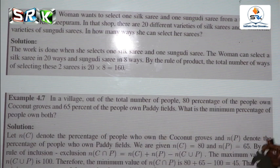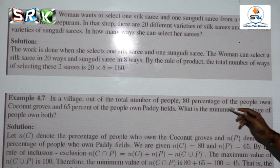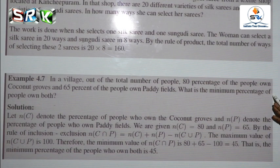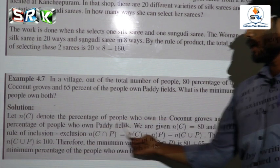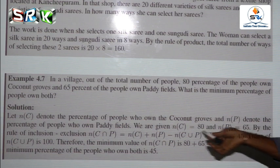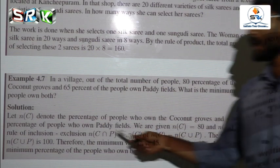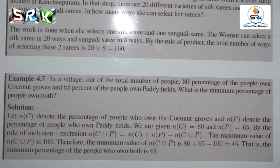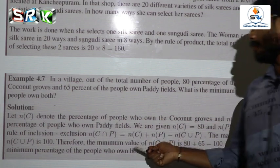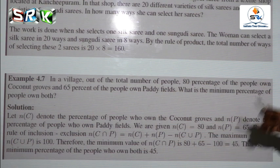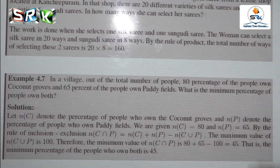Another problem: In a village, 80% of people want coconut groves and 65% of people want paddy fields. What is the minimum percentage of people who want both? By inclusion and exclusion: N(C∩P) = N(C) + N(P) − N(C∪P). The maximum value of N(C∪P) is 100%. So the minimum of N(C∩P) = 80 + 65 − 100 = 45%. The minimum percentage of people who want both is 45%.